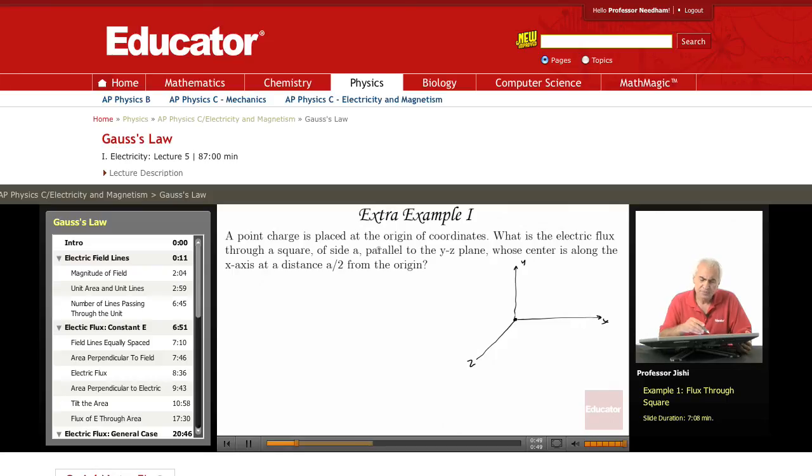We have a point charge at the origin, some point charge Q at the origin. What is electric flux through a square of side A, parallel to the YZ plane, whose center is along the X axis at a distance A over 2 from the origin?